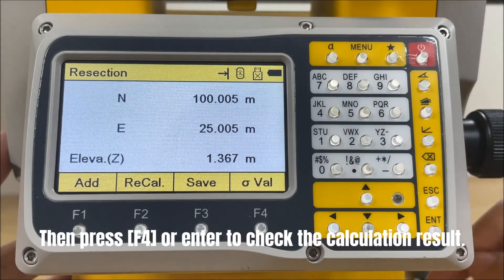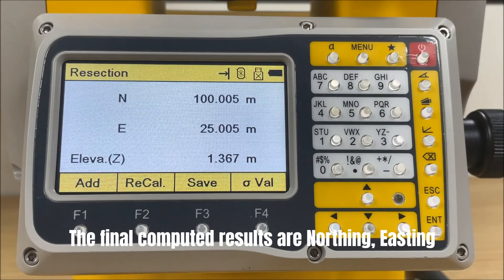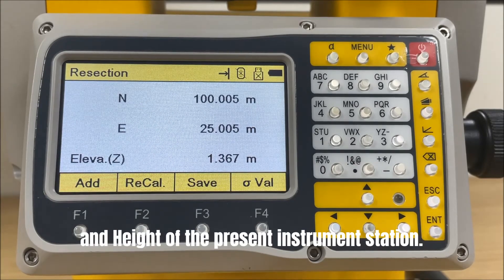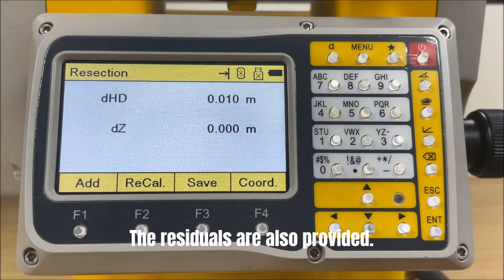Then press F4 or enter to check the calculation result. The final computed results are northing, easting, and height of the present instrument station. The residuals are also provided.